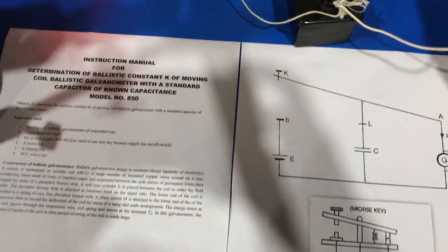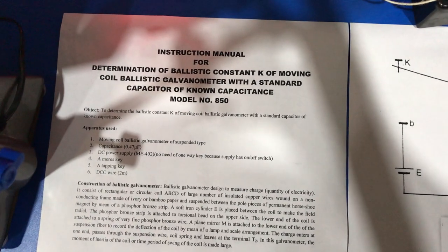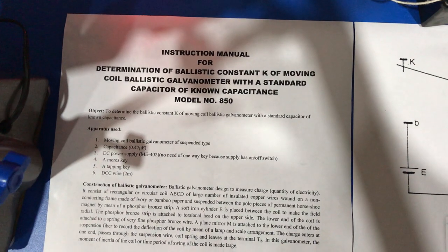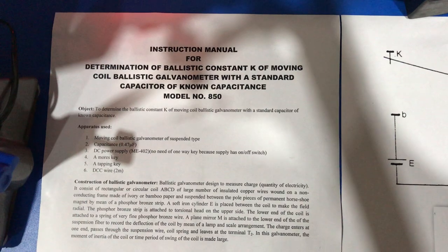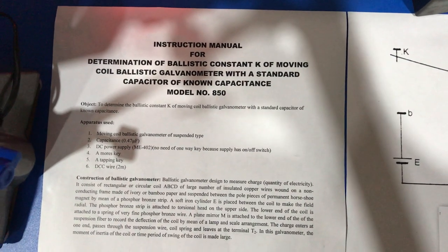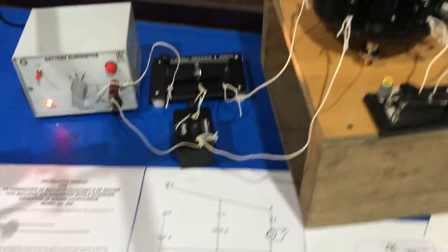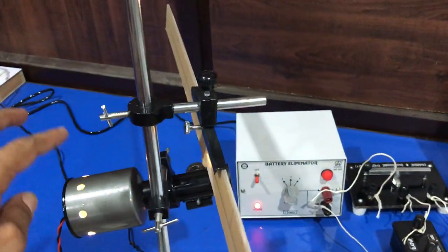Hello everyone, today I'm going to demonstrate how to determine the ballistic constant of a moving coil ballistic galvanometer with a standard capacitor of known capacitance. In order to perform this experiment we require a ballistic galvanometer, lamp and scale arrangement for the ballistic galvanometer.